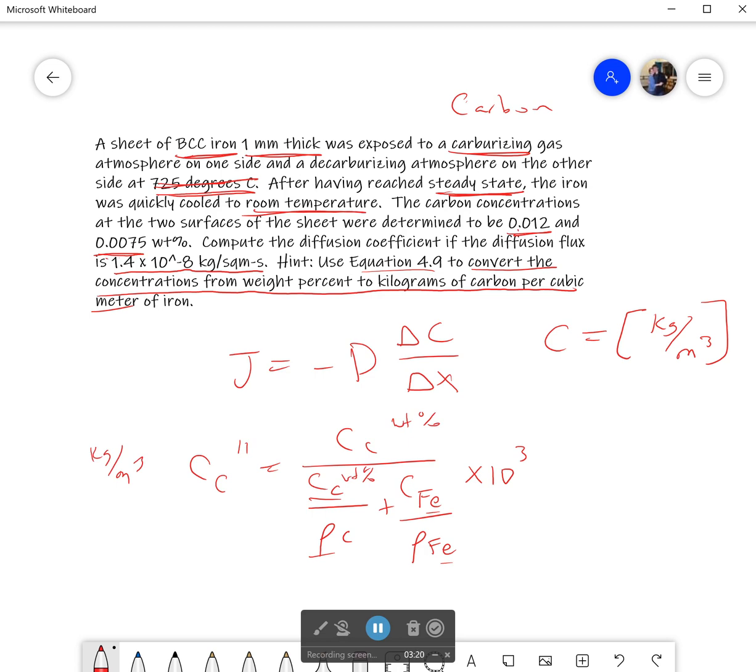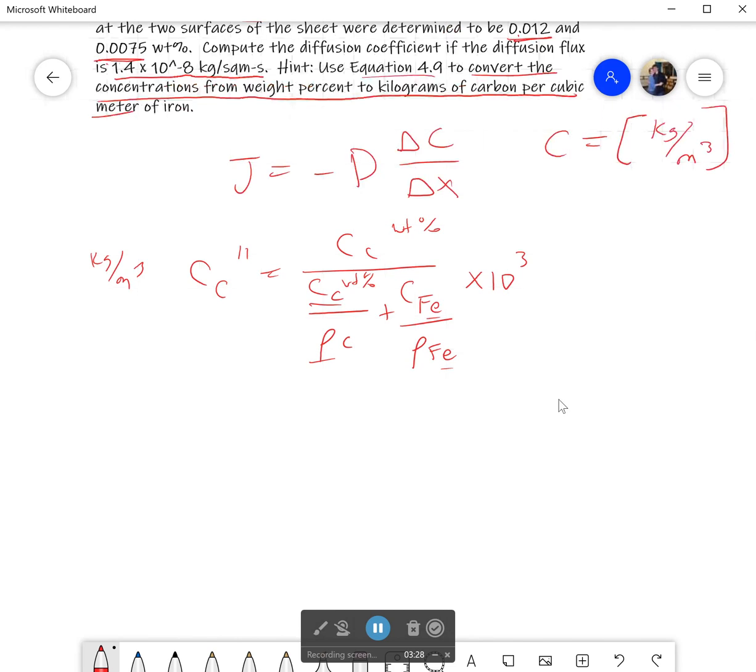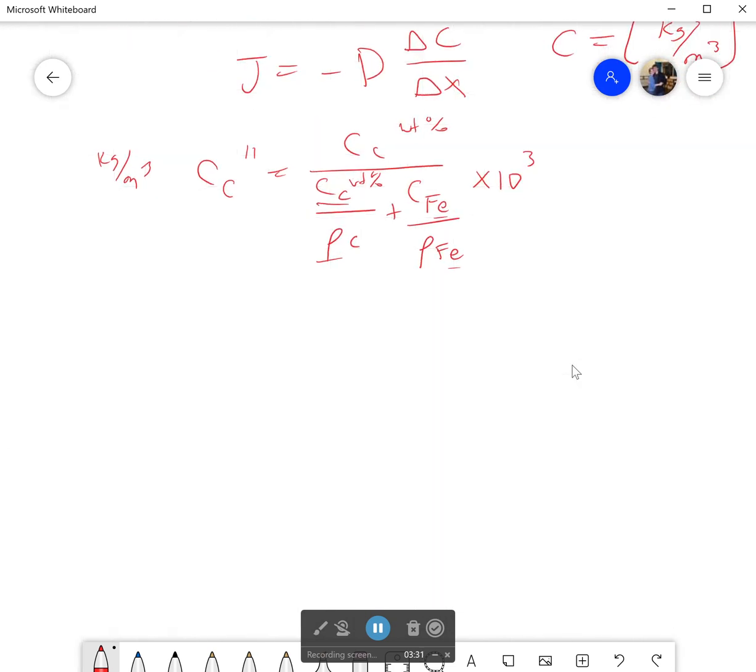We'll have to do this for each of them. We'll have to do this for the 0.012 and the 0.0075 situations. So if I plug this in, I do it correctly, which is not necessarily a given. So this would be for the 0.012 weight percent. If I type it in correctly, it looks something like the following. You can get the densities of carbon and the densities of iron. If you want to, you can look online. You can also just go ahead and look in your book. Your book should have a table with it.